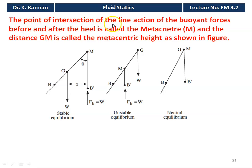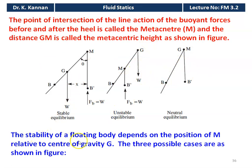The point of intersection of the line of action of the buoyancy force before and after heel is called the metacenter M. The distance GM is called the metacentric height. The stability of the floating body depends on the position of M relative to the center of gravity G.